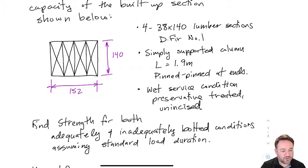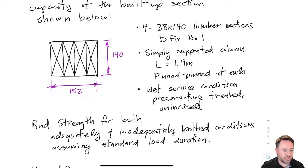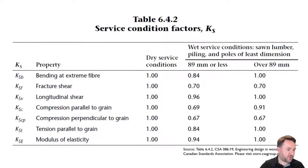The built-up section is only for calculating strength; it doesn't change the service condition calculation. Since these members are not actually a solid member, water can get in between the different plies much more easily than it could get into the center of a solid member. So the correct approach is to consider ksc for each individual ply. For each ply at 38 by 140 — least dimension 89 or less — my ksc is 0.69 and my kse is 0.94.